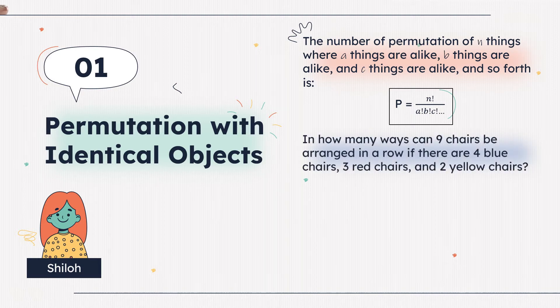An example is, in how many ways can 9 chairs be arranged in a row if there are 4 blue chairs, 3 red chairs, and 2 yellow chairs?